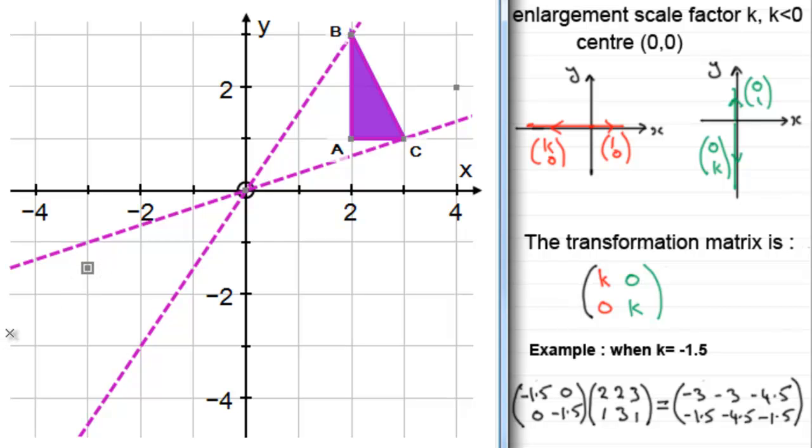B was at (2,3), now it's at (-3, -4.5). (-3, -4.5). And finally, C, which was at (3,1), has now gone to (-4.5, -1.5). (-4.5, -1.5) looks to be about there.